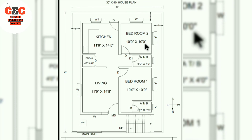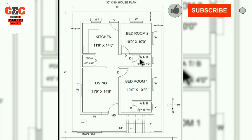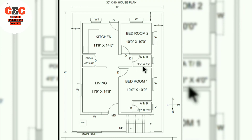Coming to bedroom two, the size of this room is 10 feet by 10 feet. On the west side, a common bathroom is provided which is also attached. The size of this bathroom is 6 feet by 4 feet.